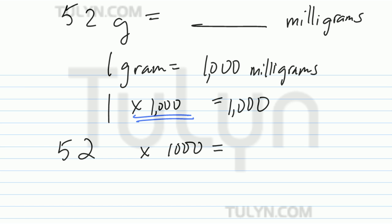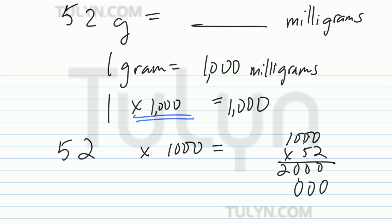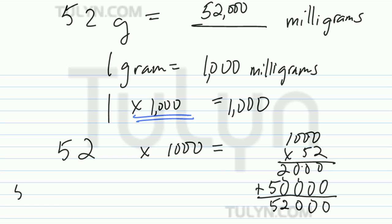So, 52 times 1,000 is what? Go ahead and find out. Working through the multiplication: 52,000 milligrams. So, 52 grams equals 52,000 milligrams.